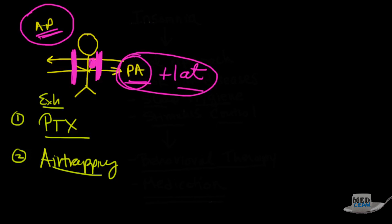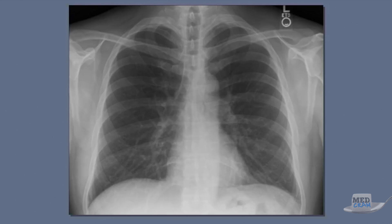When you approach a chest x-ray, make sure you're looking at the right x-ray. Nothing is worse than going through the whole process only to realize it's either the wrong patient or from the wrong date. Once you've confirmed that, you can move on to the systematic review. Notice the marker on the x-ray — the 'L' refers to the side of the patient. Remember that the right side of the screen is always the left side of the patient and vice versa.